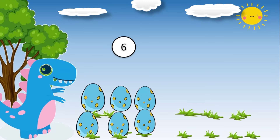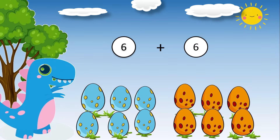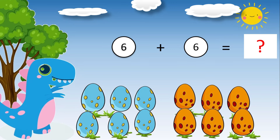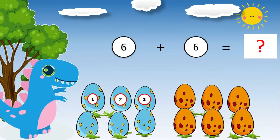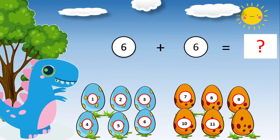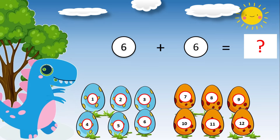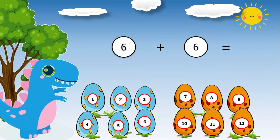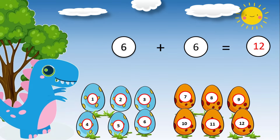Six dinosaur eggs plus six dinosaur eggs is equal to what? Do you want to know the answer? Let's add one, two, three, four, five, six, seven, eight, nine, ten, eleven, twelve. Six plus six equals twelve.